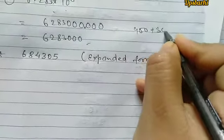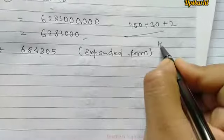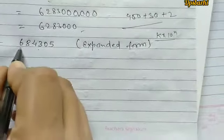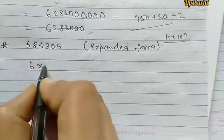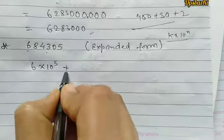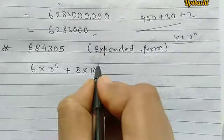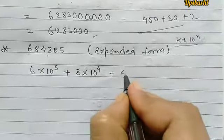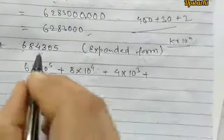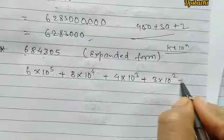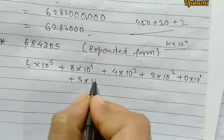In expanded form: 400 + 30 + 2, or using powers of 10 — for example, 1 × 10 to the power 4, plus 4 × 10 to the power 3, plus 3 × 10 to the power 2, plus 0 × 10 to the power 1, plus 5 × 10 to the power 0.